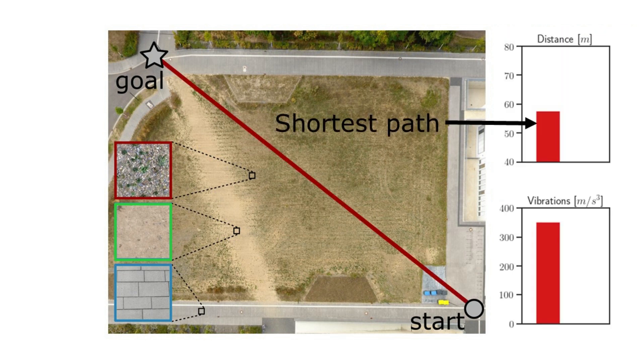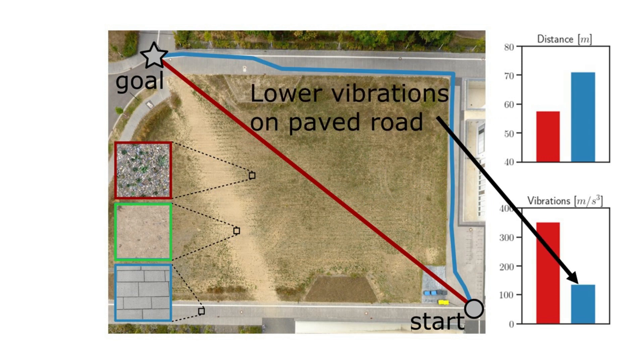In this environment, by following the shortest path to the goal, the robot navigates on gravel that causes strong vibrations on board. In this scenario, a path that follows paved roads offers significantly lower vibrations despite the longer travel distance.